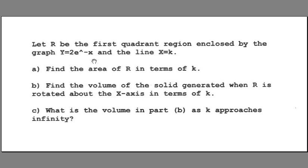Let R be the first quadrant region enclosed by the graph y equals 2 times e to the minus x and the line x equals k, a constant. And we're asked three things from this.